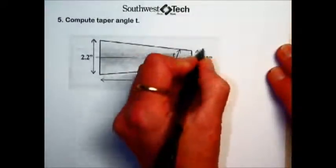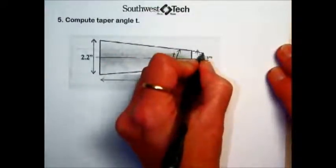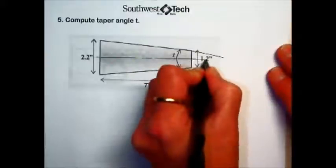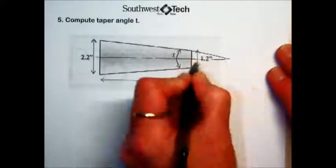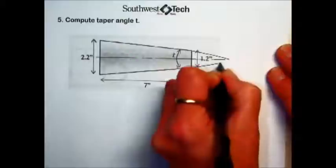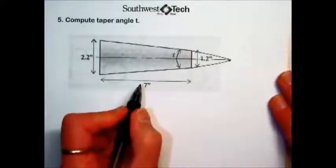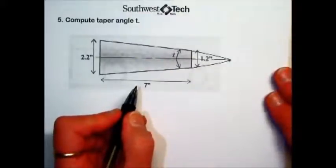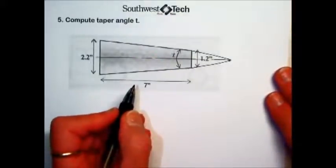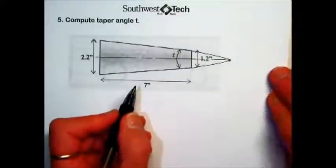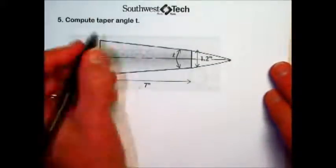This steel shaft doesn't have that taper angle on it, but they're asking us to calculate that angle of this taper. It may seem a little odd, but the trick to computing the taper angle is to create a right triangle by squaring off the taper.